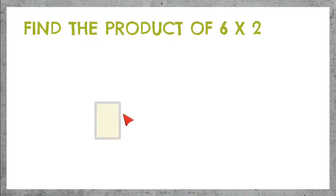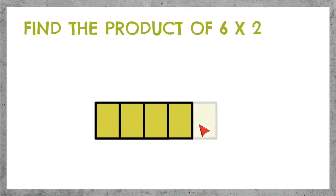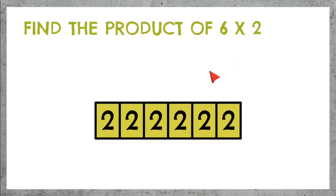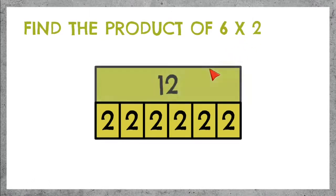6 times 2. We need 6 parts with 2 inside of each of them. Now let's count: 2, 4, 6, 8, 10, 12. So we know that 6 times 2 is 12.